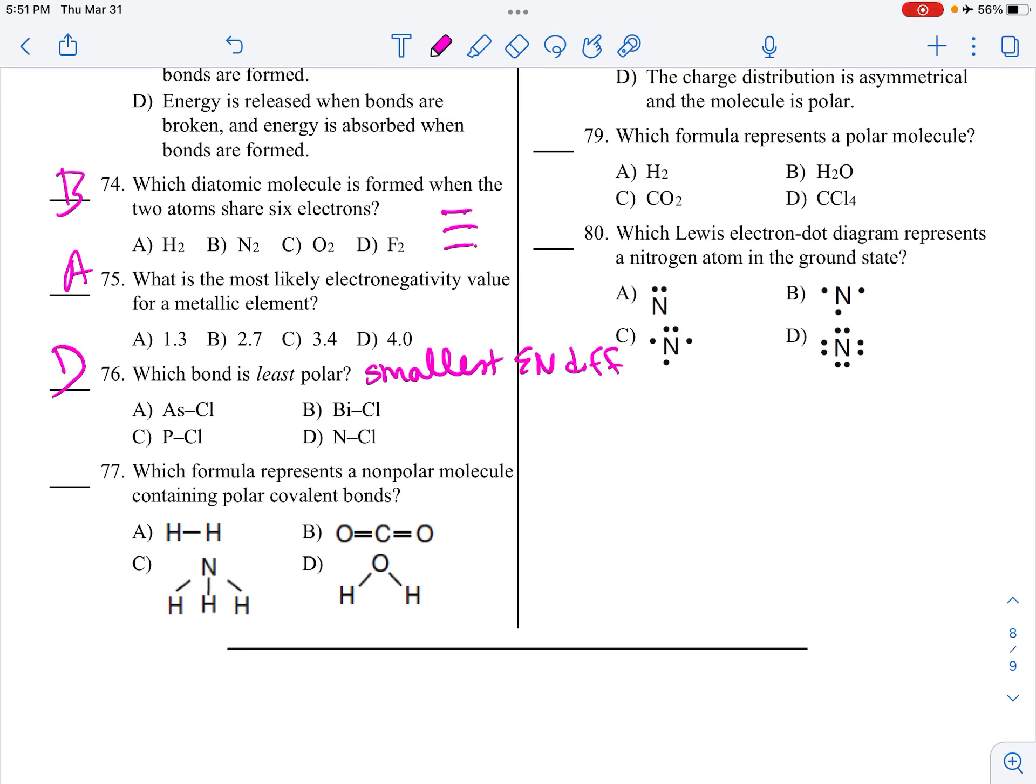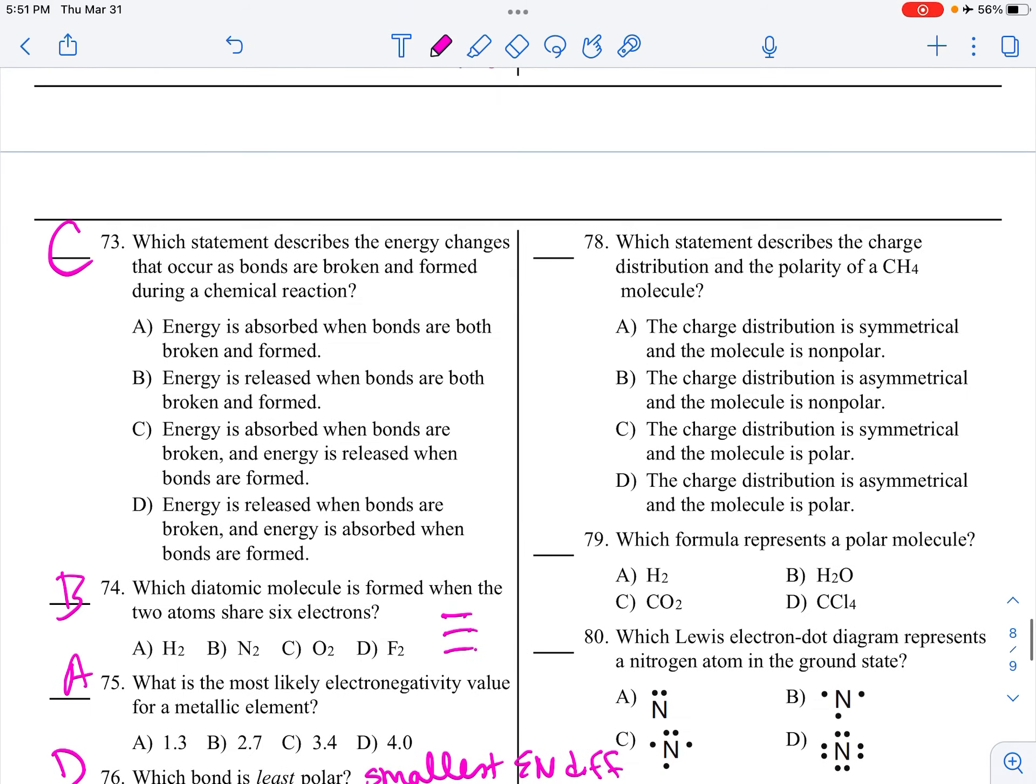Non-polar molecule is symmetrical. So that's going to get rid of this one and this one. And you also have to have polar bonds. That's symmetrical. 77 is B. CH4 would look like this. Charged distribution is symmetrical and the molecule is non-polar.